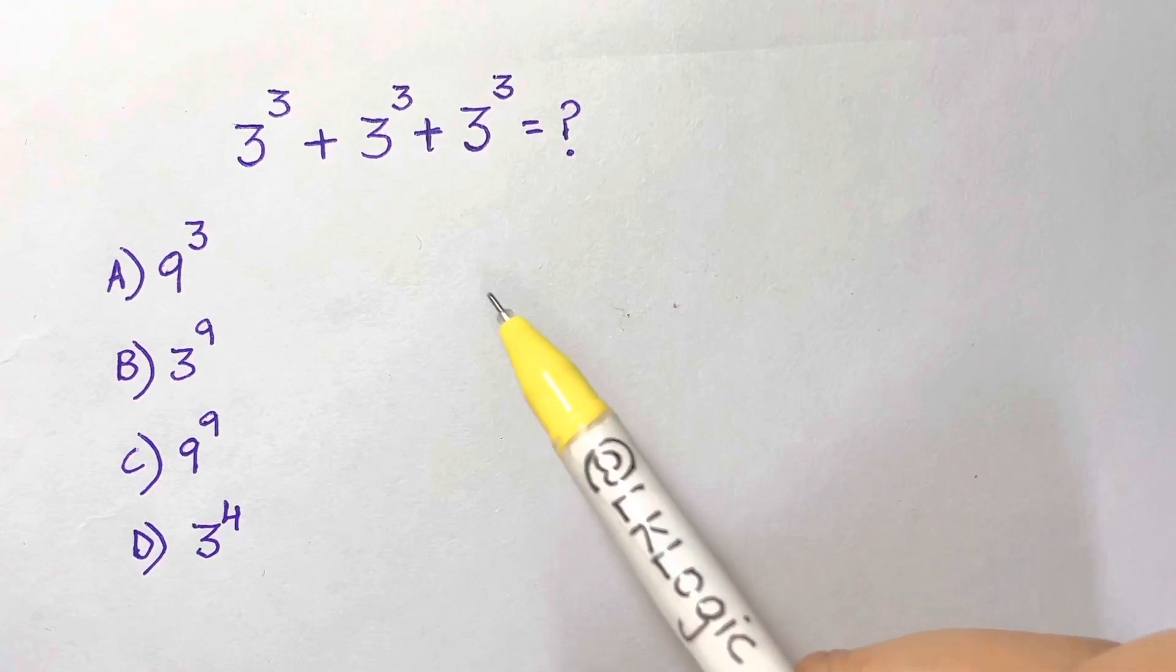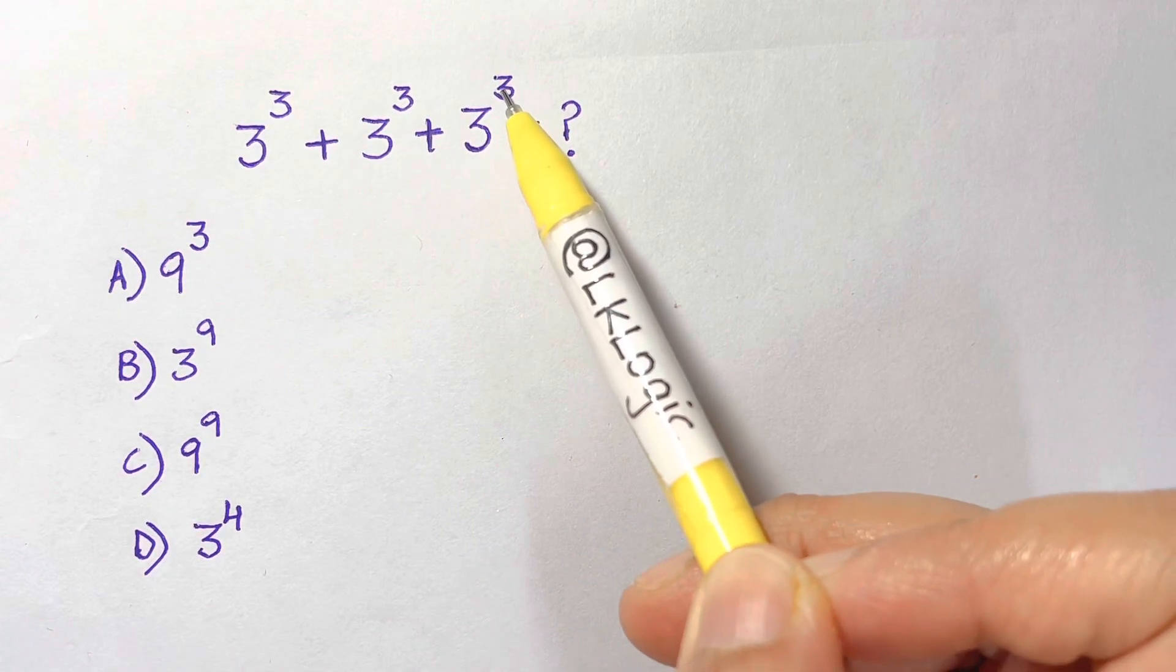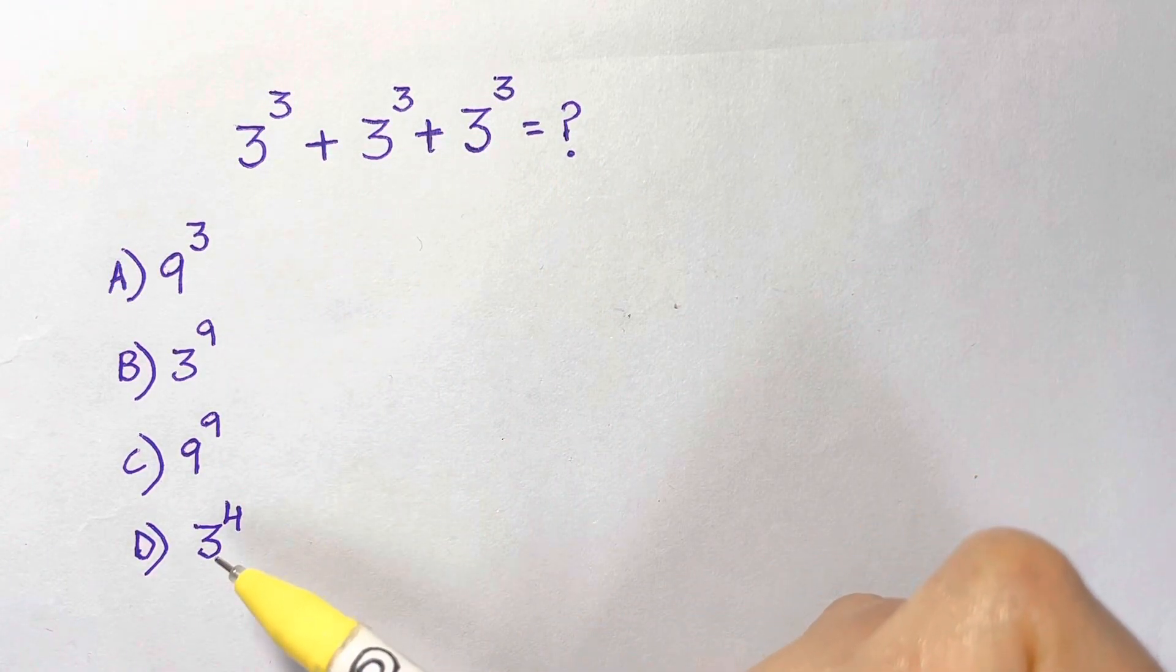Hi everyone, have a nice exponential equation to solve which is 3 to the power of 3 plus 3 to the power of 3 plus 3 to the power of 3 equals what? So we have four choices.